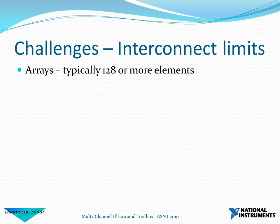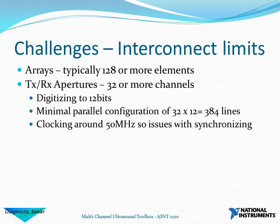We also have a challenge with the number of interconnect lines. Our step-scan array typically has 128 or more elements, but it's more relevant to consider the active aperture at a time. If we've got a transmit-receive aperture of 32 elements with 12-bit digitizing at 50 MHz, that involves 32 times 12, which is 384 separate tracks if you're acquiring in parallel. This is a real challenge at those data rates, so we need to find some alternative.